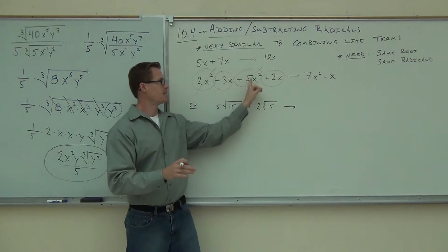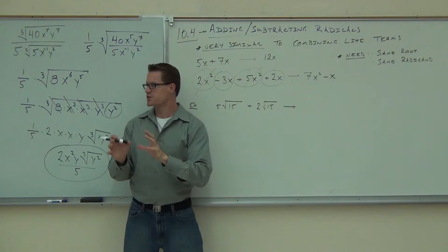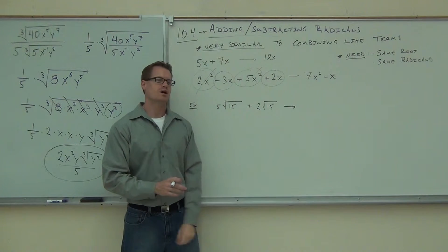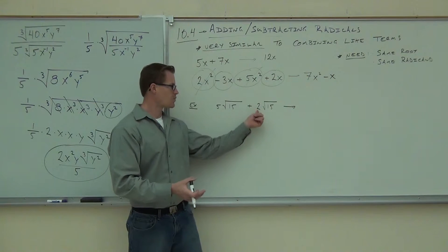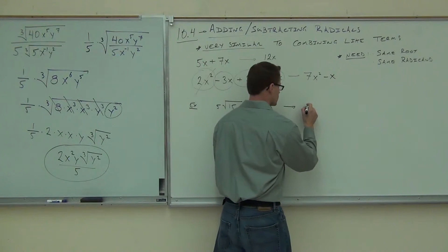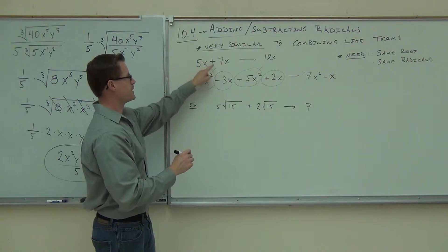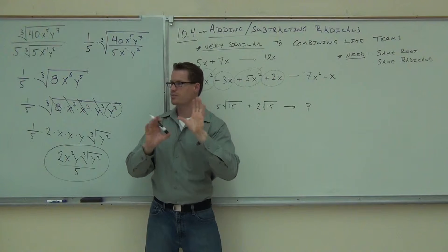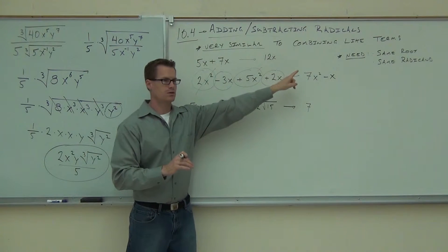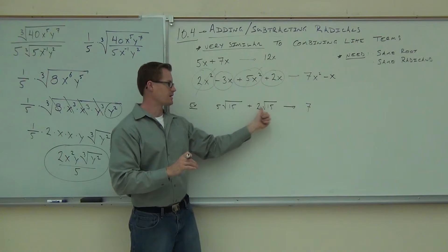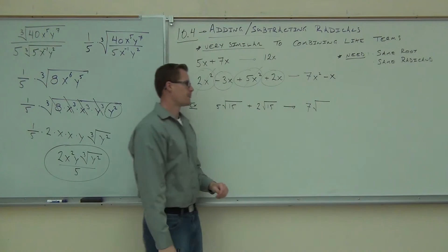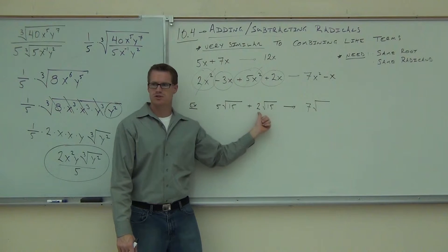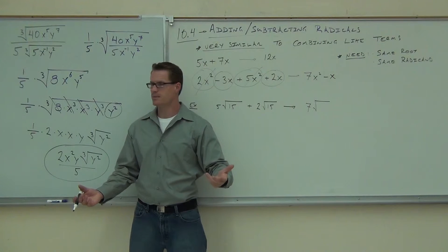Now the same radicand is like having an x and an x. So we look for the same root because that's our exponent, and the same radicand because that's like our base. Do we have the same root and the same radicand? We're going to be able to add these things. I'm probably going to get a 7 — I have a 5 and a 2, that's giving me 7. The question is, what do I get out of root 15 and root 15? When we added 5x and 7x, did the x change at all? No. So we're not going to get a fourth root — we're going to still have a square root.